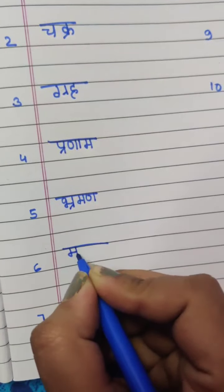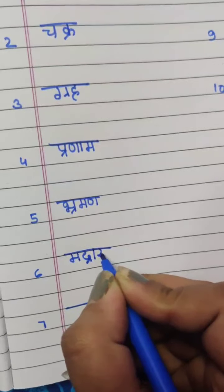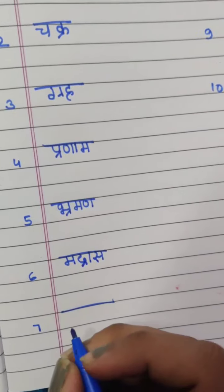M, D, D mein Padeen ki matra and Ha ki matra and Sir, it became Madras.